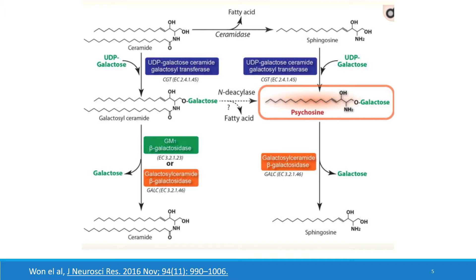Psychosine is synthesized by galactosylation of sphingosine, which is generated from deacylation of ceramide by ceramidase. Interestingly, psychosine may also be synthesized from galactosylceramide by the action of N-deacylase. Psychosine is neurotoxic and present at extremely low levels in normal cells and tissues; however, when there is GALC deficiency, psychosine can accumulate to very high levels in tissues, especially in the brain.